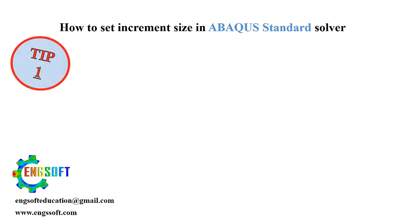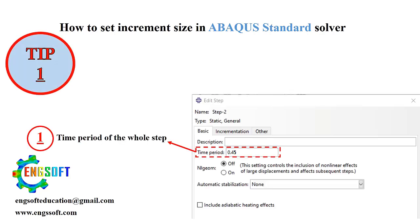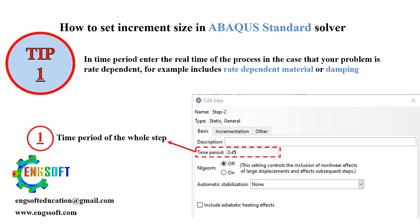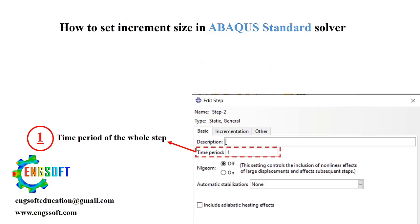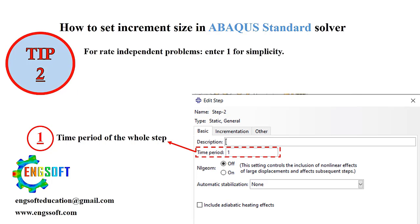Tip 1 — Time period: If your problem involves rate-dependent materials, like those with rate-dependent materials and damping, make sure to enter the actual time period of the process. Tip 2 — For simplicity: If your problem is rate-independent, you can set the time period to 1. Easy, right?